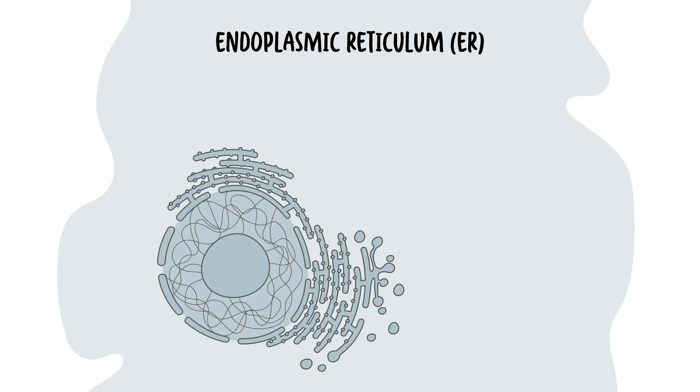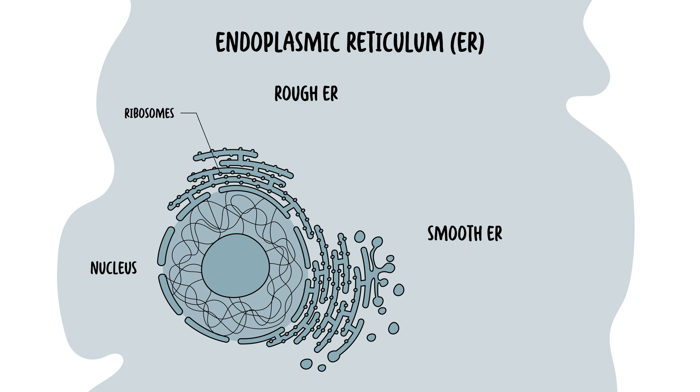Now the endoplasmic reticulum, which is somewhat continuous with the nuclear envelope. The endoplasmic reticulum is divided into the rough and the smooth endoplasmic reticulum. The rough endoplasmic reticulum is studded with ribosomes on its cytoplasmic surface, giving it this rough appearance. It is involved in synthesis of proteins that are either excreted from the cell, incorporated into the cell's plasma membrane, or shipped to an organelle. It also plays a role in the initial stages of protein modification and folding.